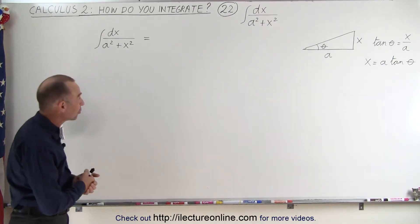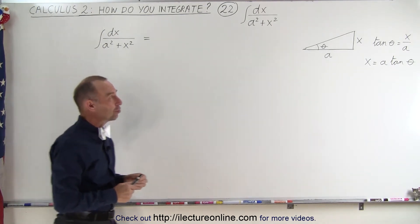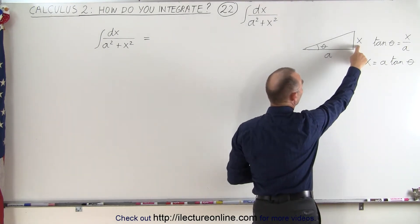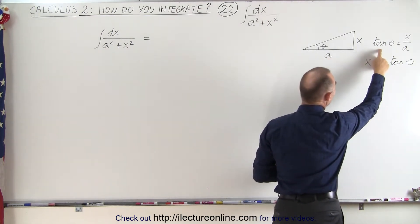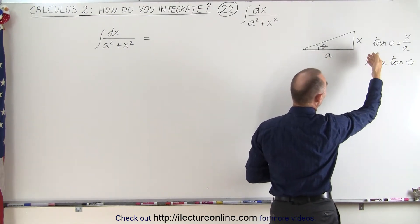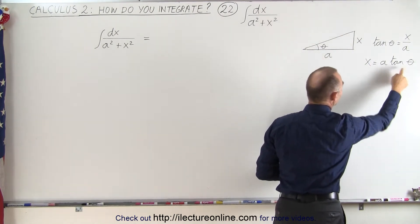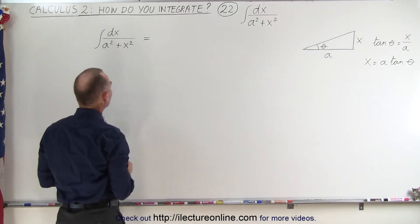Well, if you don't know the trick it may take you a while. But let's think about a trick substitution. If we have a triangle here and we call the opposite side to the angle x and the adjacent side a, then the definition of the tangent of the angle is going to be equal to the ratio of the opposite side over the adjacent side. So we can write x = a tan θ, and then we're going to substitute that in here for x.